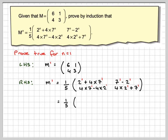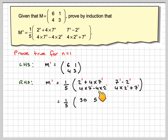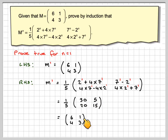We're going to have the 1 fifth — we'll keep that outside. So we've got: 4×7 + 2 = 30; 7 − 2 = 5; 4×7 − 4×2 = 20; and 4×2 + 7 = 15. Now we divide each of these by 5, and we end up with [[6,1],[4,3]], which is the matrix that we want.